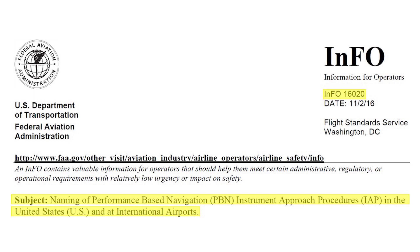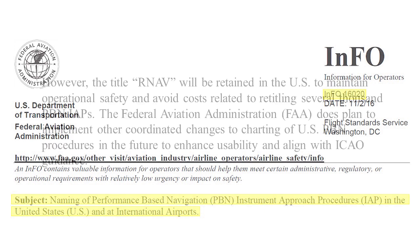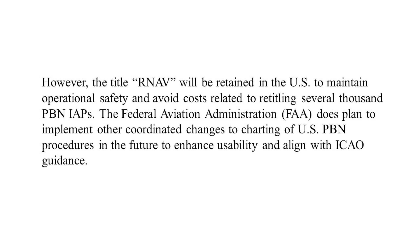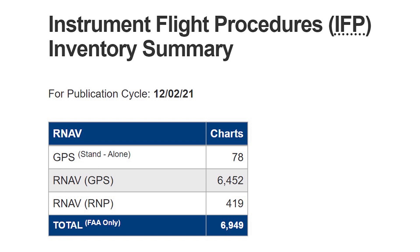So why doesn't the FAA adopt the new ICAO standard? Doing so would reduce some of the confusion caused by using terms like RNP and RNAV for different purposes, often on the same chart. The explanation is in a document the FAA published in 2016. The FAA says that changing the titles of thousands of charts would be too cumbersome and costly. The agency does have a point — at the end of 2021, the FAA had nearly 7,000 RNAV GPS approaches in its inventory. Updating them all to the new ICAO standard would be a challenge. For now, we'll just have to read the titles and notes carefully.